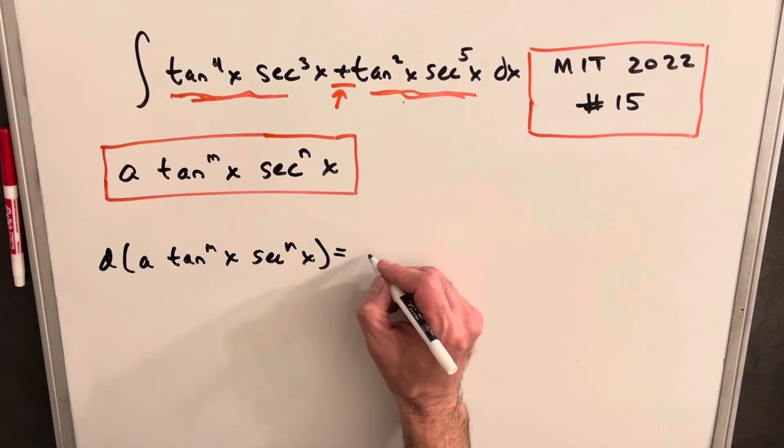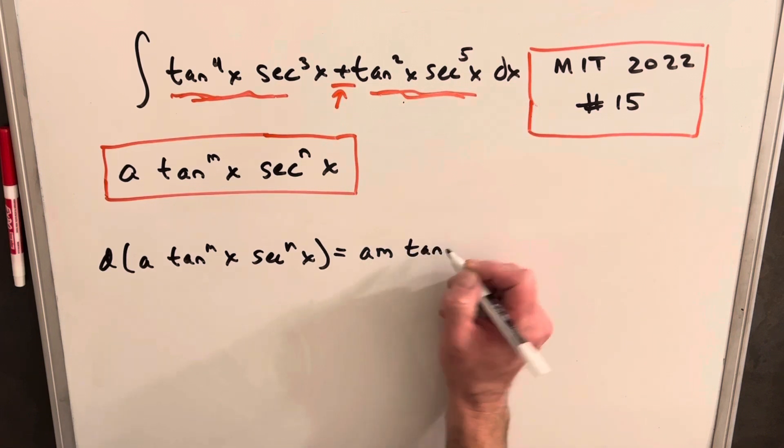Okay, so we'll just differentiate this. And of course, we'll use the product rule. That's what this is all about. So we'll differentiate the first function, and we're just using the power rule there, so we're bringing the m out, tan m minus 1 x. And then we need the chain rule, so we need the derivative of this, which is secant squared x. And then we're just going to keep our secant.